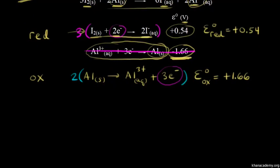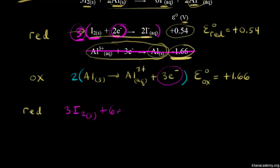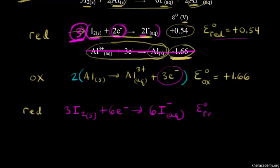Let's rewrite our half reactions. For the reduction half reaction multiplied by three, we have 3I₂ plus six electrons giving 6I⁻. Remember, we do not multiply the voltage by three because voltage is an intensive property. So the standard reduction potential is still positive 0.54 volts.